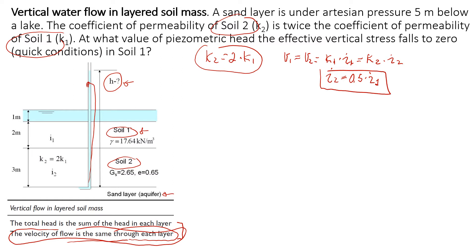Now the second statement: the total head is the sum of the heads in each layer. We need to find the total head for these two layers. As mentioned previously, we look at two water levels — the surface of the lake and the level in the piezometer — and the difference gives us the total head, which we'll call delta h.